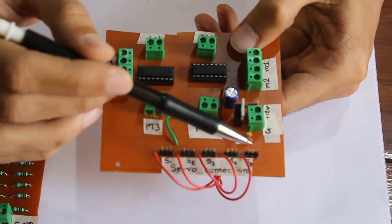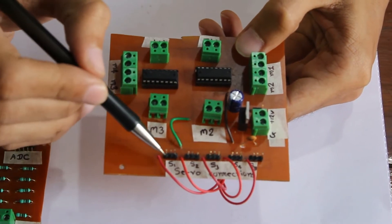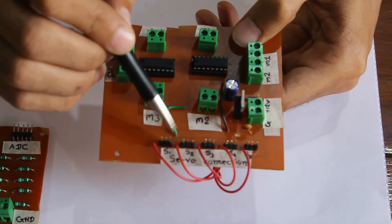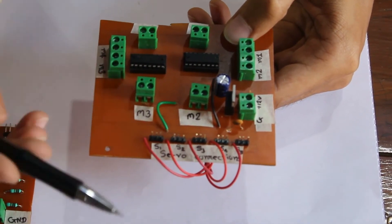This is the servomotor connection. Servomotor has three pins: ground, VCC, and signal. These 5 signal pins are connected to microcontroller.